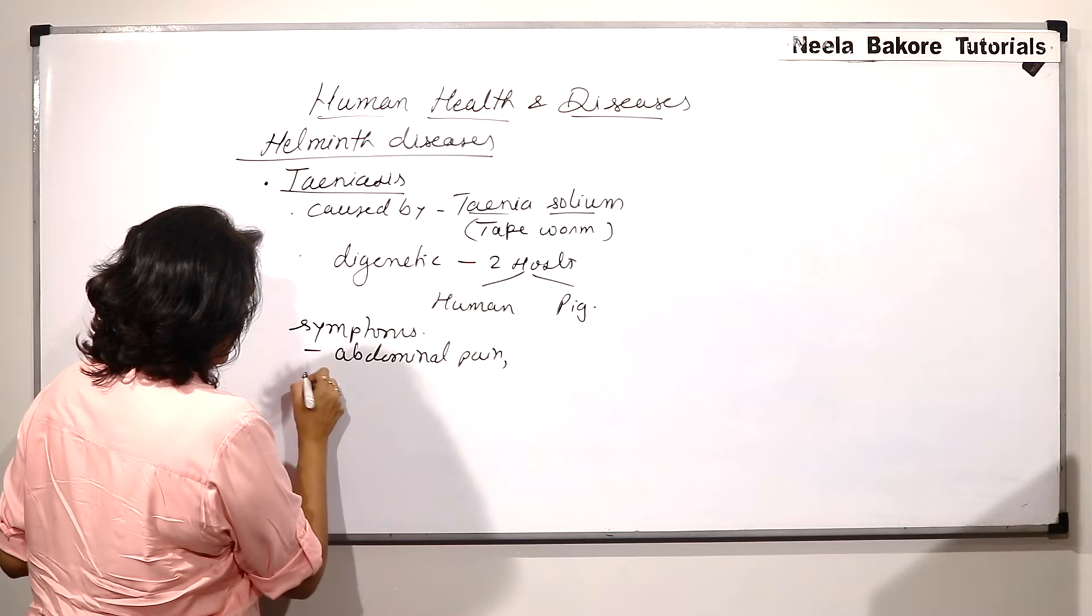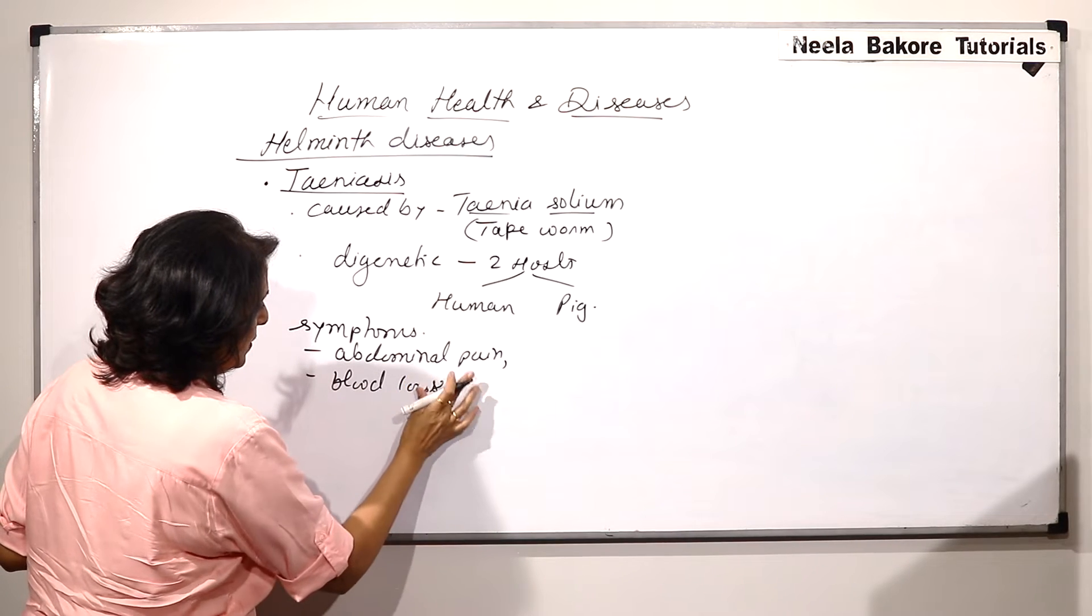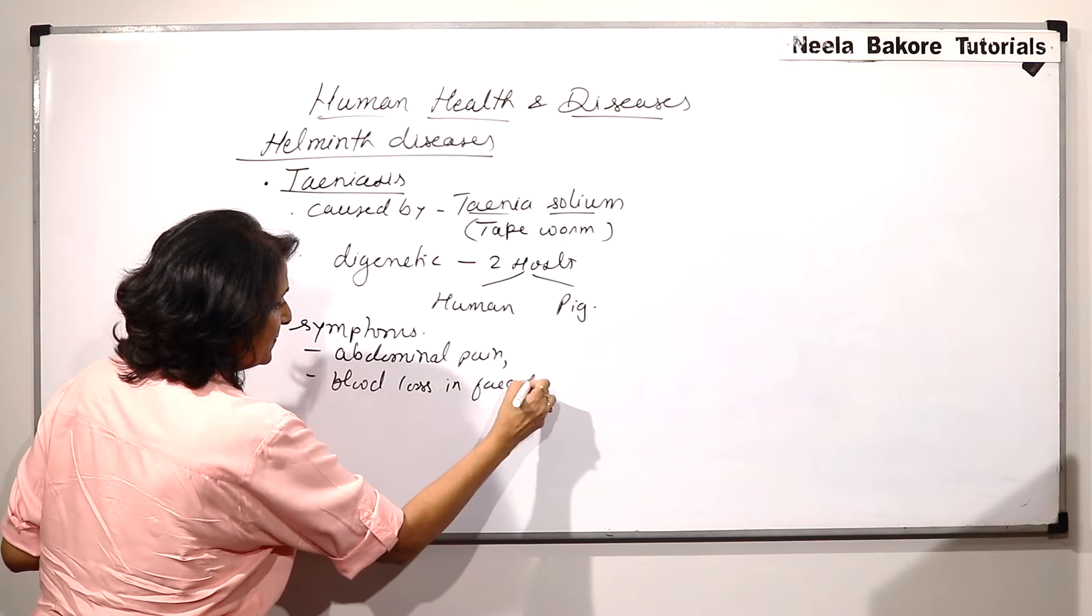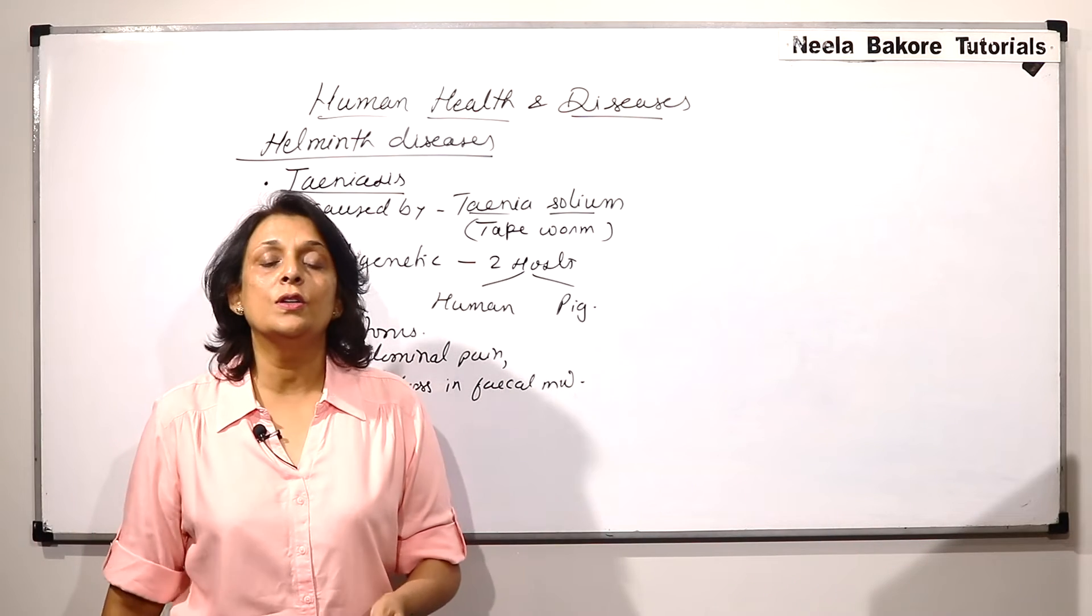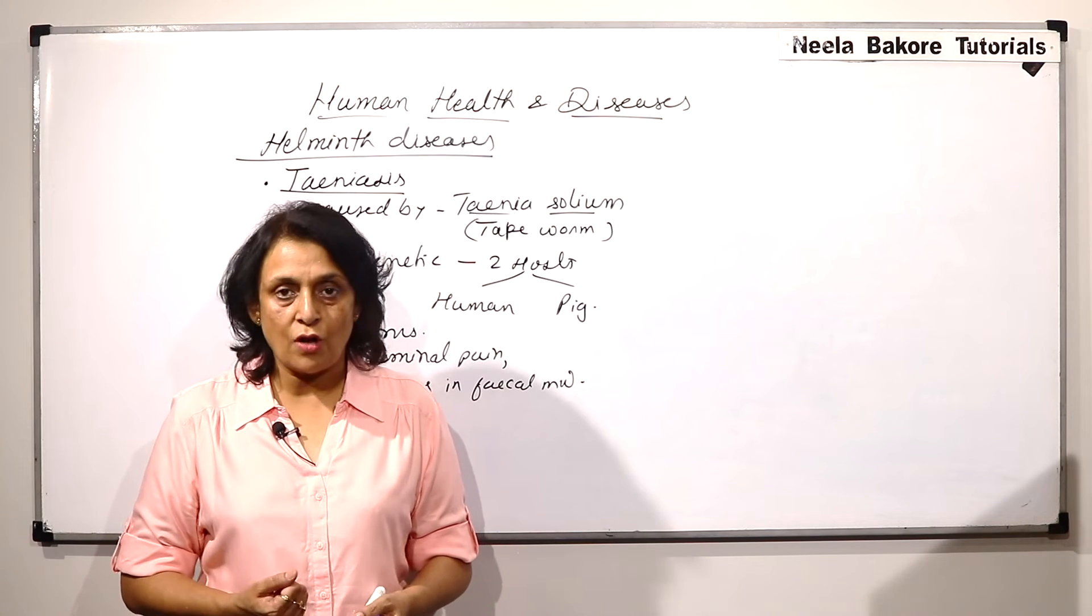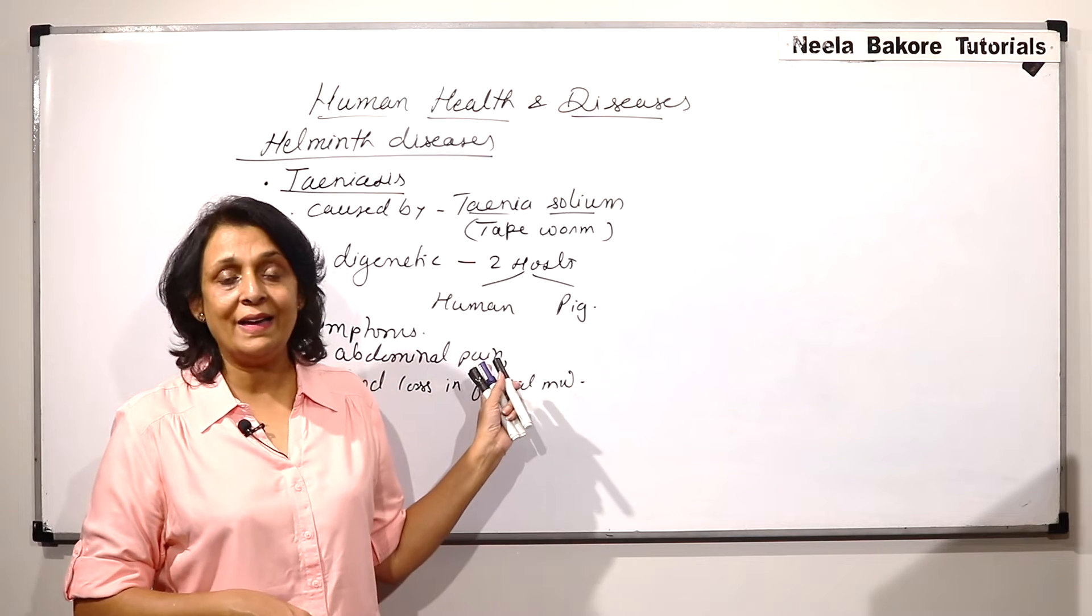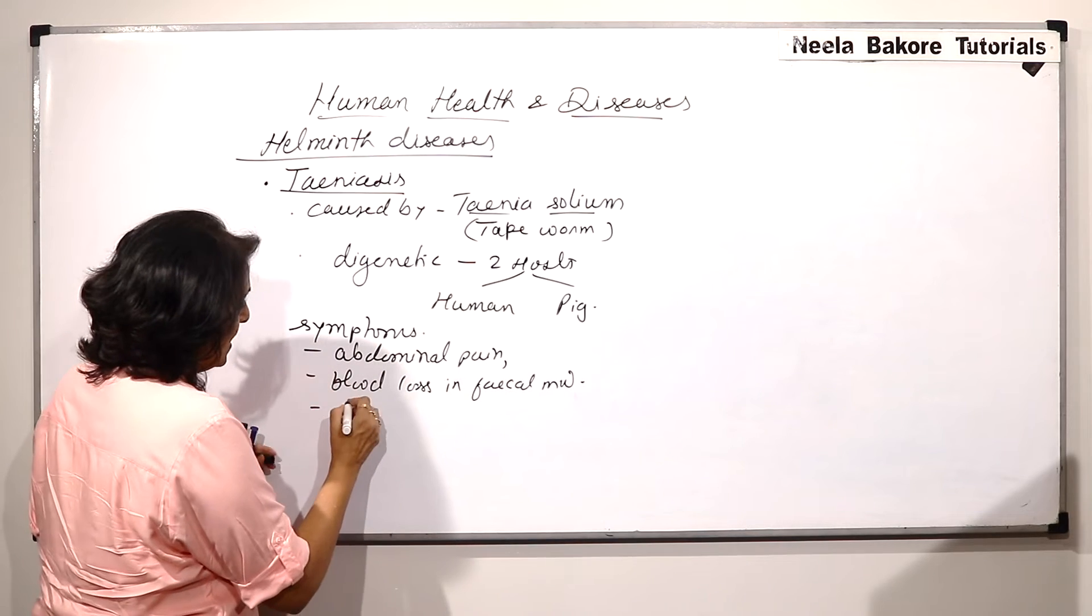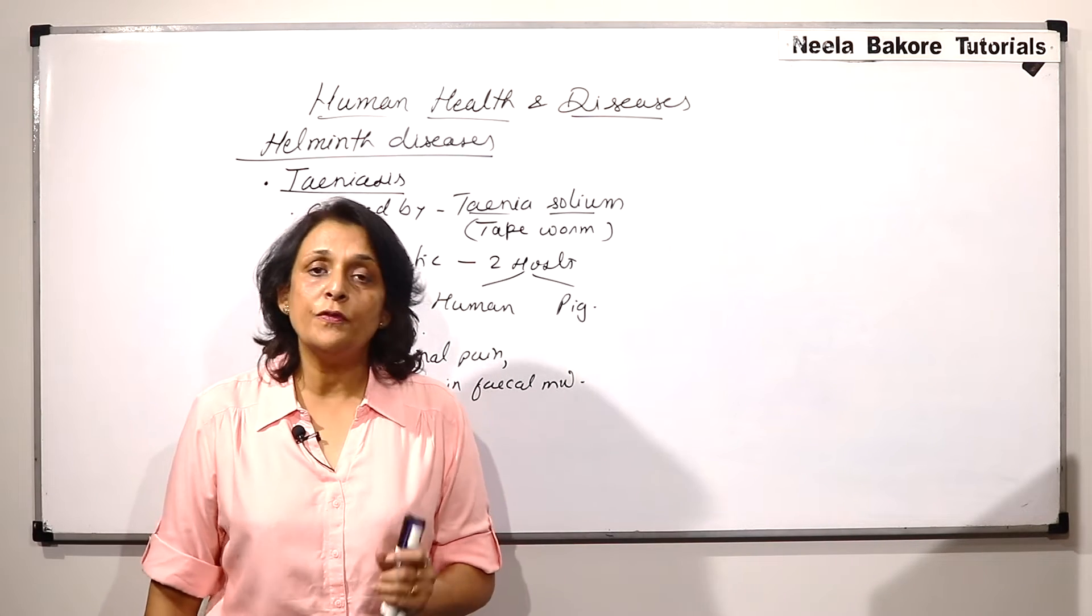Blood loss in fecal matter and even after the person eats sufficient food then also the weight gain is not proper because all that nourishment which we absorb is taken by the pathogen or the endoparasite. So, there is low weight. So, these are common symptoms of Taenia.